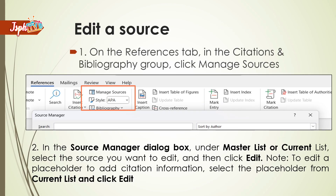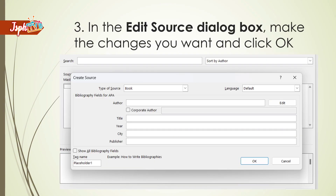To edit a source, on the References tab in the Citations and Bibliography group, click Manage Sources. In the Source Manager dialog box, under Master List or Current List, select the source you want to edit, then click Edit. To edit a placeholder to add citation information, select the placeholder from Current List and click Edit. In the Edit Source dialog box, make the changes you want and click OK.